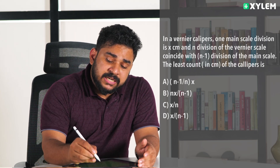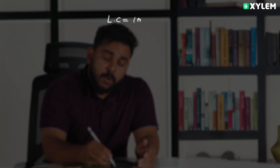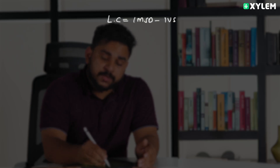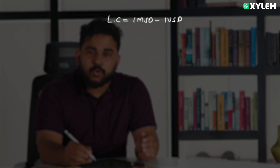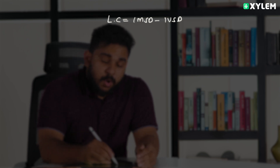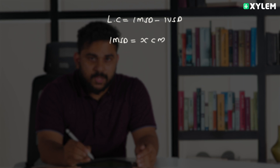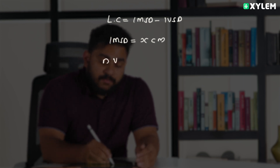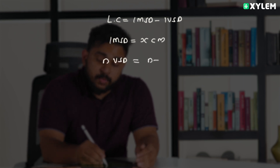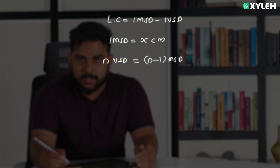First, we use the least count equation: the least count is equal to 1 main scale division minus 1 Vernier scale division. We are given that one main scale division is x cm. Therefore, n Vernier scale divisions equals n-1 main scale divisions.